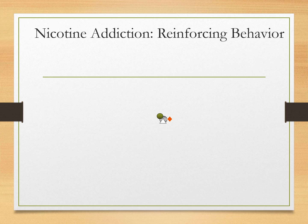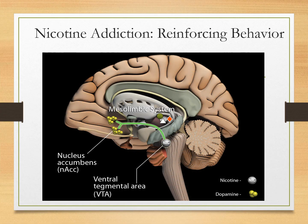Now, why does nicotine or tobacco addiction happen — what is happening inside the brain? There are neurochemicals inside your brain: nicotine and dopamine. Whenever somebody smokes, nicotine directly goes into the brain and stimulates release of dopamine specifically in the reward pathway. You can see the reward pathway here. Whenever nicotine is taken, there is excessive release of dopamine. When dopamine is released, you feel good, you feel a sense of reward. This creates a reinforcing behavior because the patient feels very good after taking nicotine.